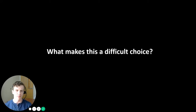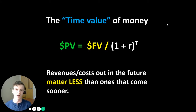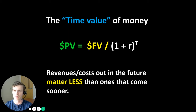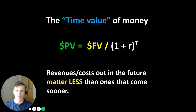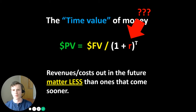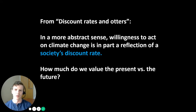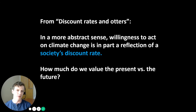Even if we all know this, it's still a difficult choice. It has to do with the time value of money — this was covered in one of your readings about discount rates. The time value of money inherently means that revenues, costs, and damages associated with climate change that occur out in the future inherently matter less than ones that come sooner. This discount rate, and its value, really matters in terms of how we balance what we think is important now versus what we think is important out into the future. The discount rate indicates a willingness to act on climate change — how much do we value the present versus how much do we value the future? How much are we willing to pay now to mitigate harmful effects that will occur far into the future that we individually may not even experience?